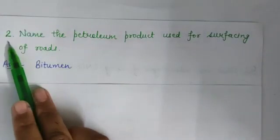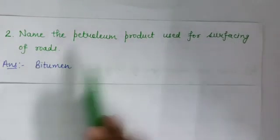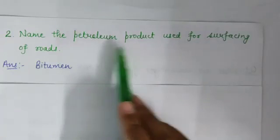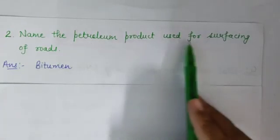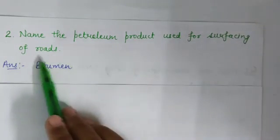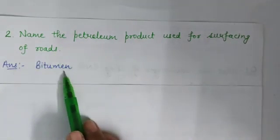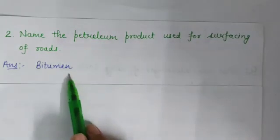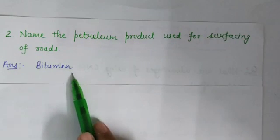Question number 2 is: name the petroleum product used for surfacing of roads. The answer is bitumen. Bitumen is a petroleum product — it is the leftover part of petroleum — and it is used for making road surfaces.